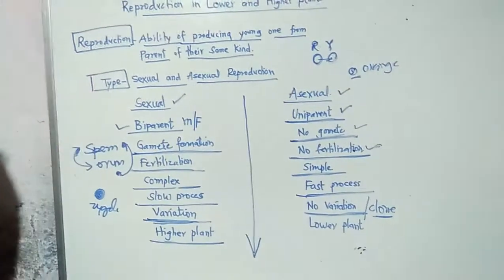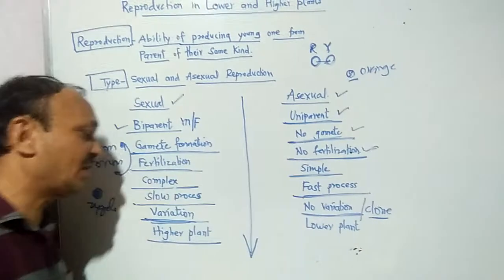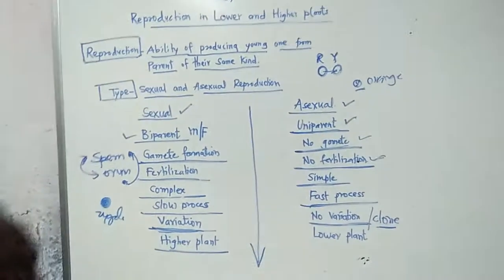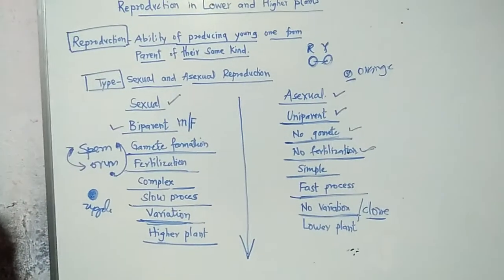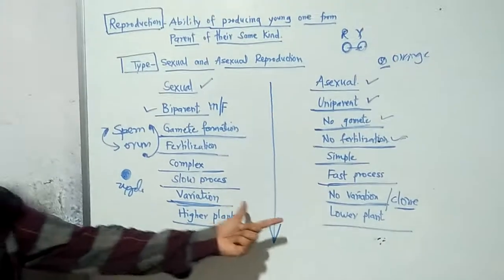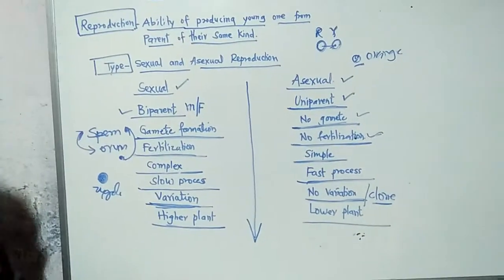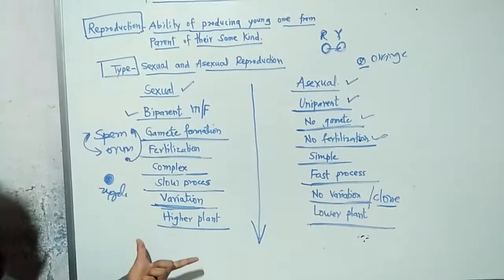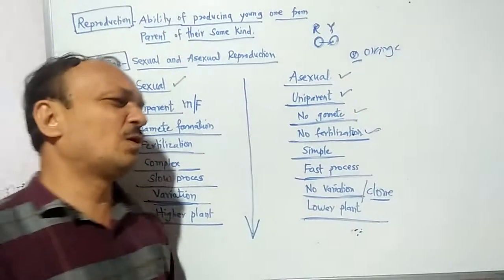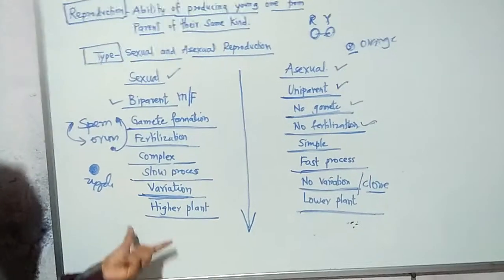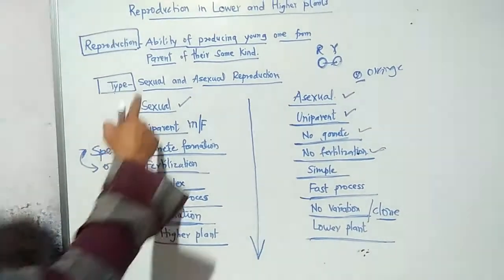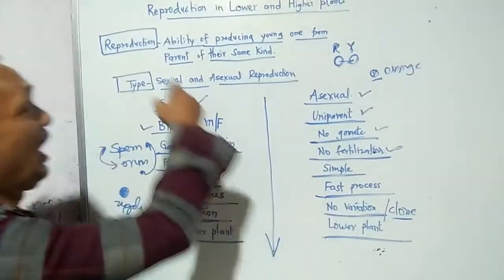Sexual reproduction occurs majorly in higher plants — vascular plants that are large and easily visible to the naked eye. Asexual reproduction occurs in lower plants such as algae, fungi, and bryophytes — the primitive and non-vascular ones. Generally, higher means vascular and advanced, while lower means non-vascular and primitive.